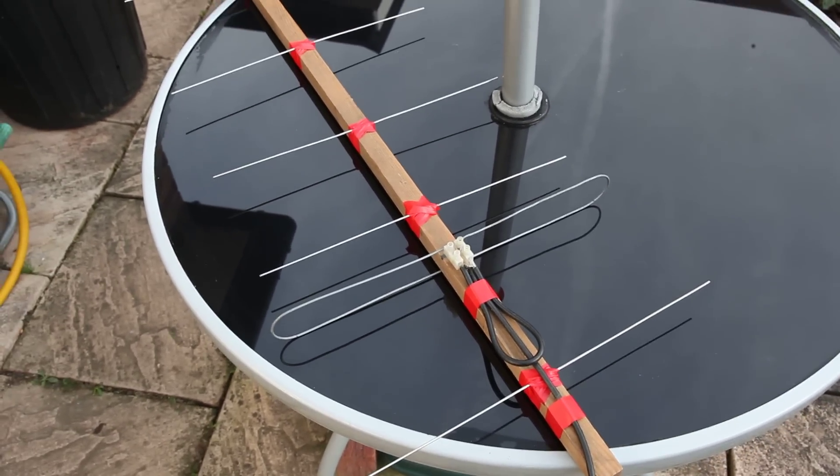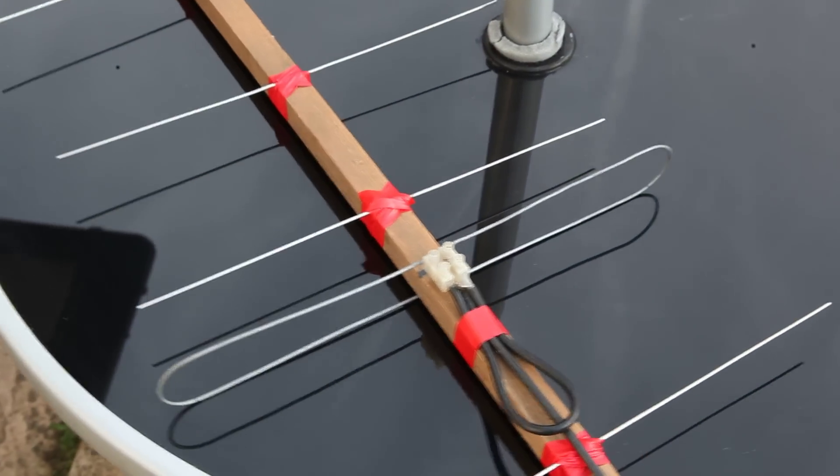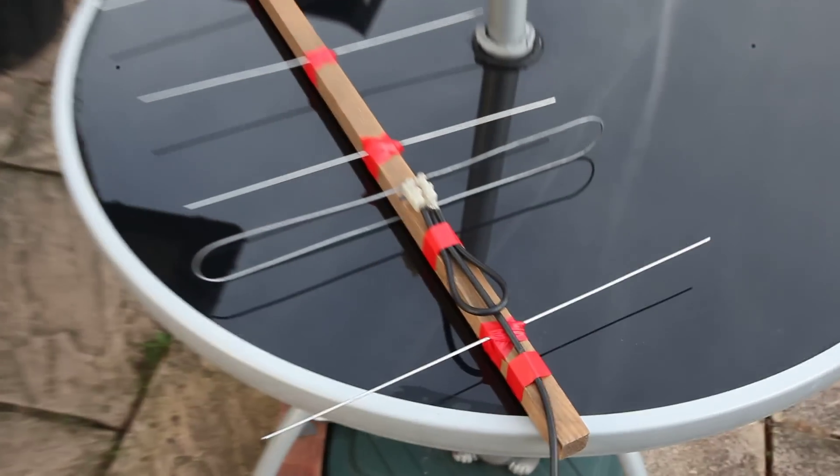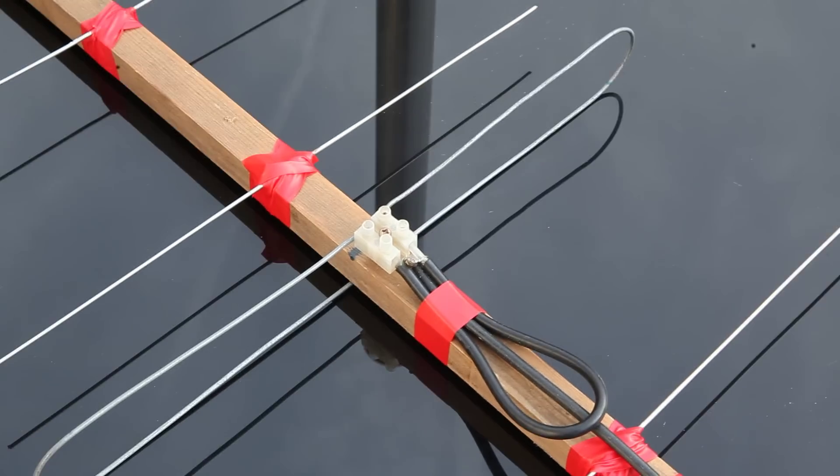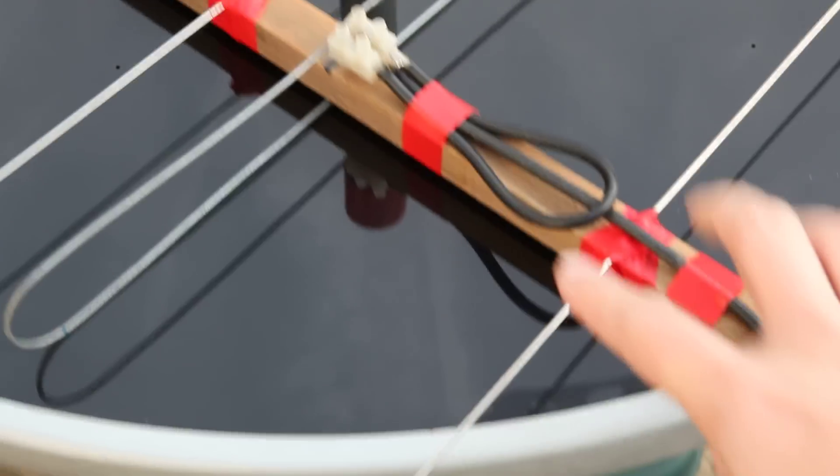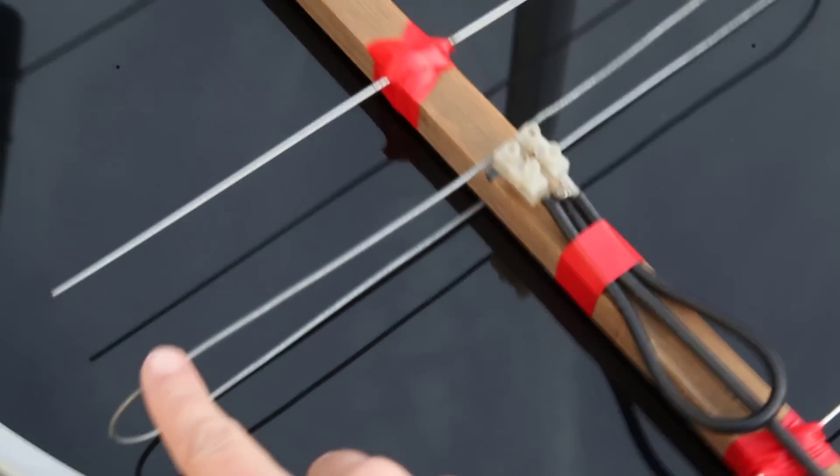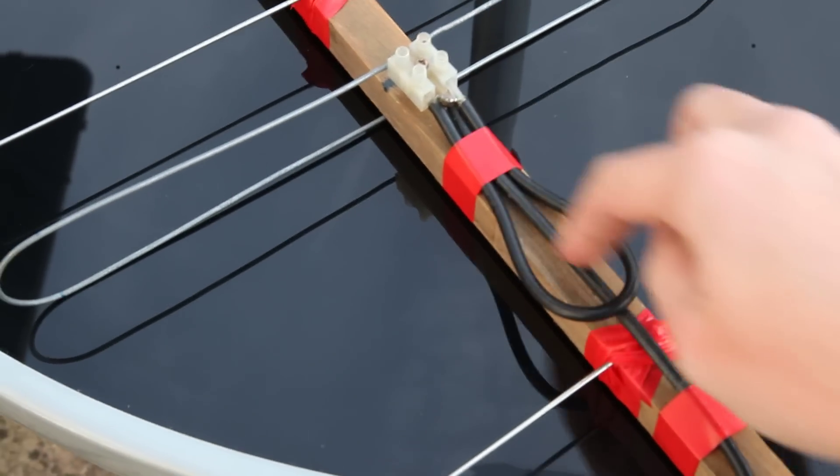This is a Yagi antenna I made for 70cm. I made this about five years ago. It's a five element and it's made out of wood and these are bicycle spokes. This is actually a coat hanger, a folded dipole. You can see the 4 to 1 coax balun here.